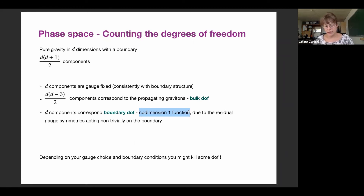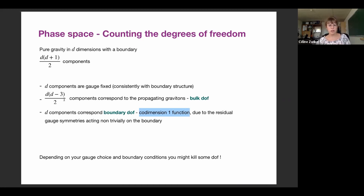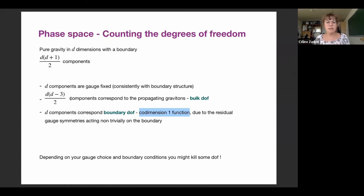Something important: if you choose your gauge, boundary conditions, or boundary structure in a bad way, you might spoil the appearance of some degrees of freedom. For example, if you impose that your boundary structure must have a specific form, you will lead to some unphysical physics in your phase space. So you have to be careful about what you allow or not — that's the game we want to play.